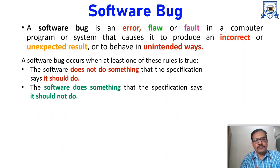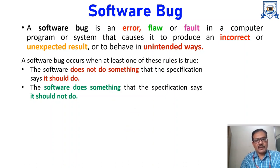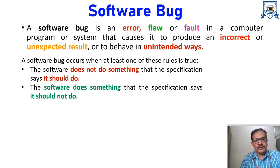The second rule is: the software does something that the specification says it should not do. During the preparation of our SRS, we have already mentioned what the system is not going to do. But if the software does something which is not specified in the specification, then again there is a bug in the software.